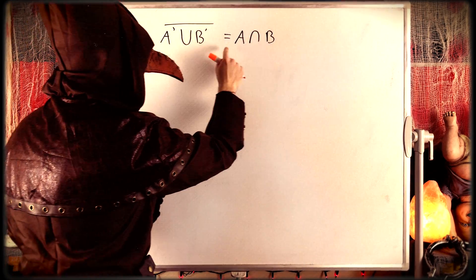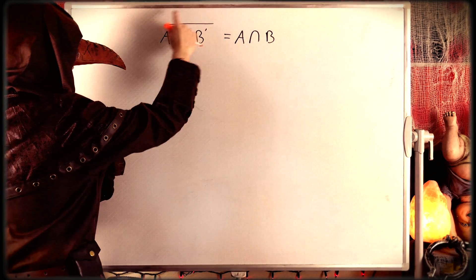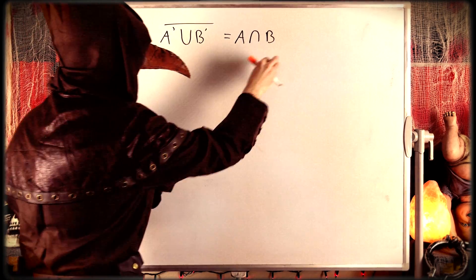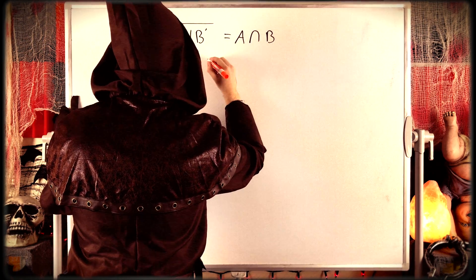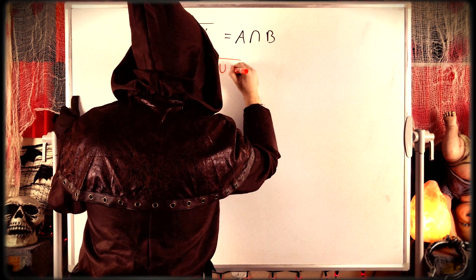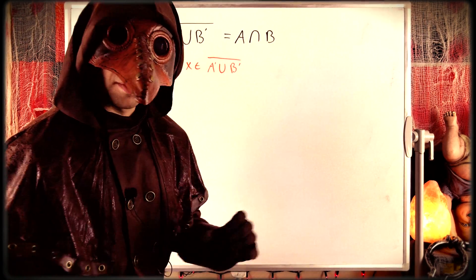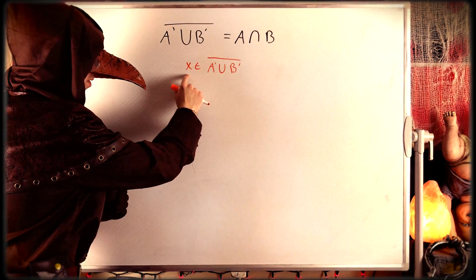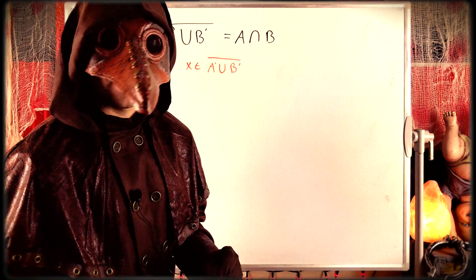To prove that this is a subset of this, we need to show that any arbitrary element of this set is also an element of this set. So we can begin by just taking an arbitrary element x from the complement of A complement union B complement. Then, just step by step, we need to apply definitions to sort of unwind what we can conclude about our element x here.